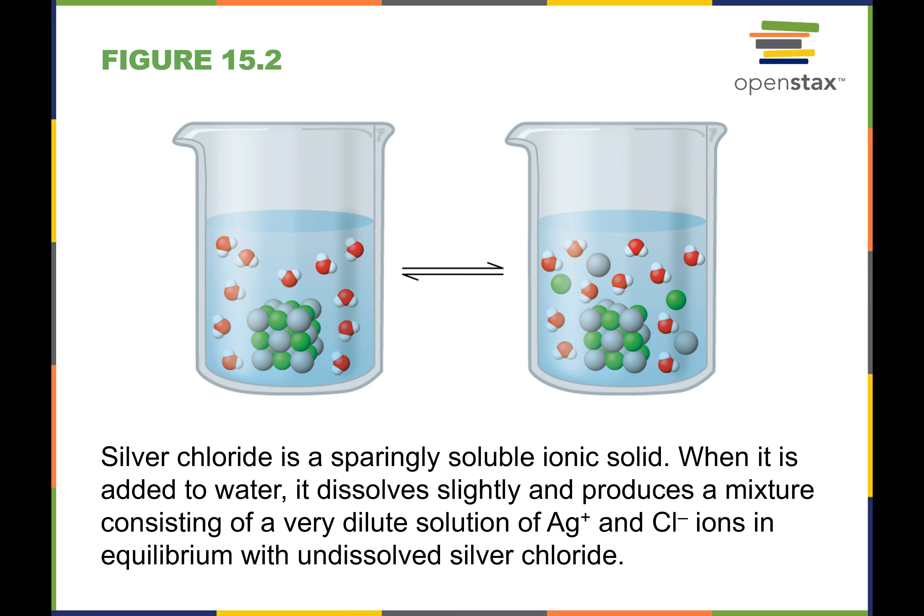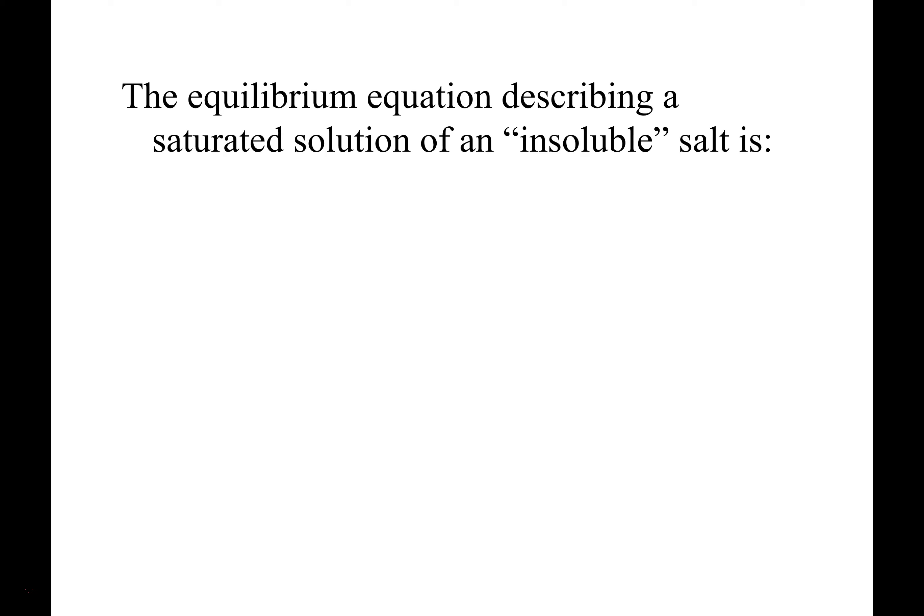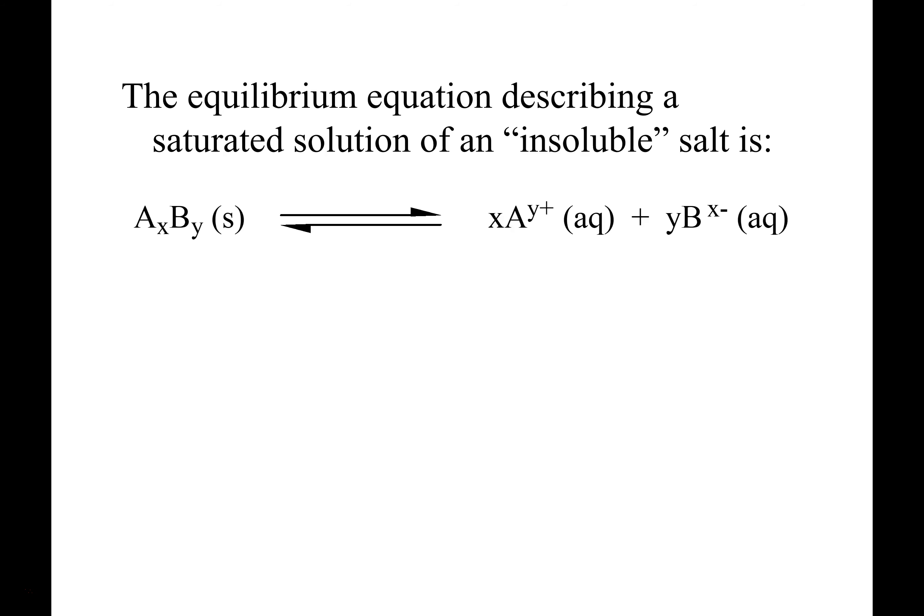When we say insoluble, it seems like it should mean not soluble at all, but it's just a little bit soluble. For example, when you took silver nitrate and sodium chloride and got a white precipitate in your equilibria lab — that white precipitate was silver chloride. Silver chloride is insoluble, and that's what you observed.